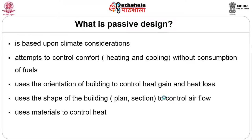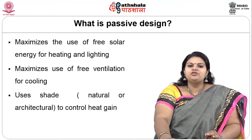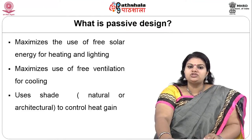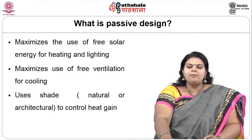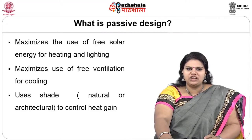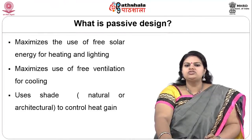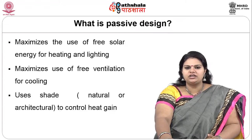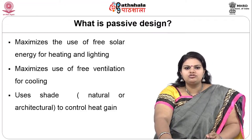We use the orientation of the building to control heat gain as well as heat loss, and the shape of the building — whether plan, elevation, or section — to control airflow, using the right kind of materials to control heat gain or heat loss depending on the climate. We need to maximize the use of free solar energy for heating and lighting, maximize the use of free ventilation for cooling, and use shade — either natural or architectural devices — to control heat gain.